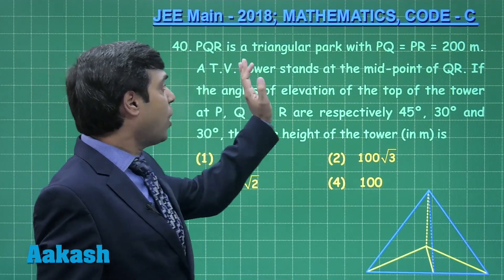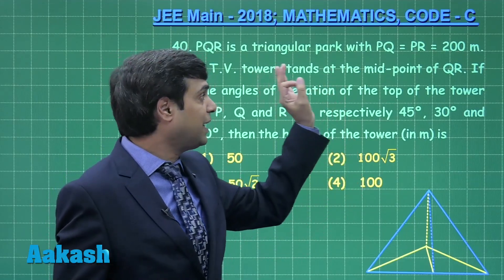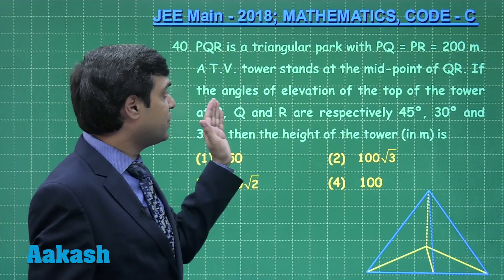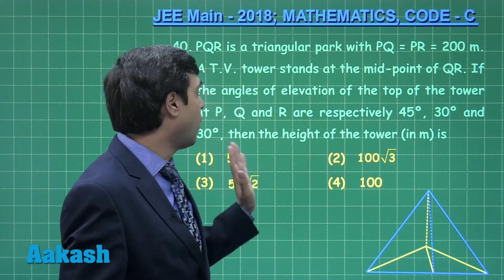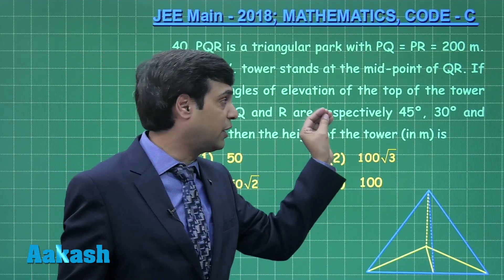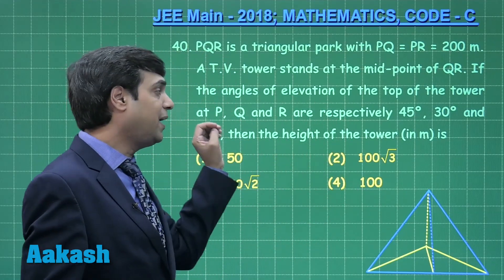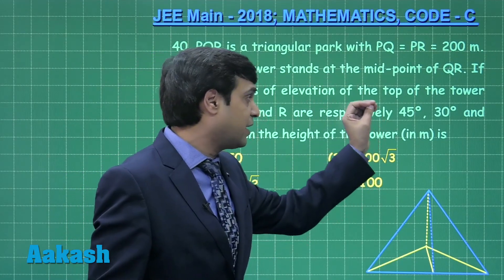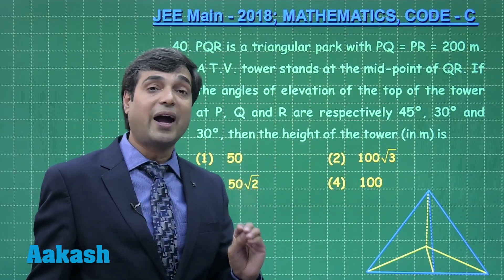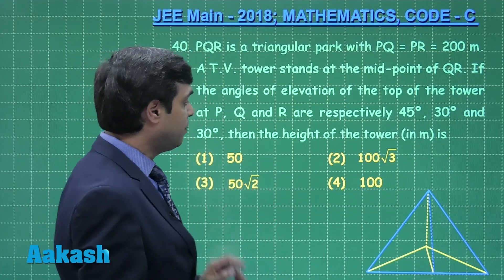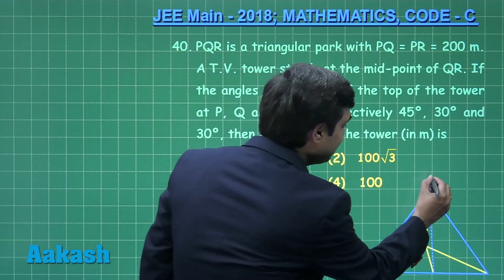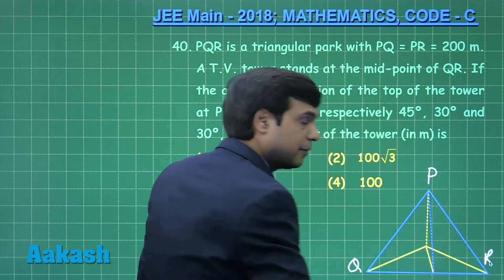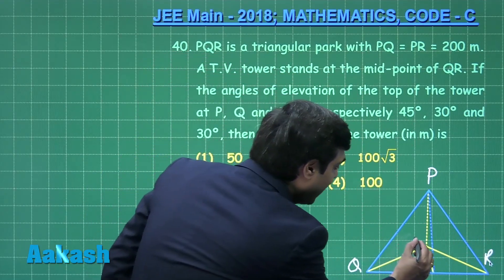Next question from trigonometry: PQR is a triangular park with PQ equals PR equals 200 meters. A TV tower stands at the midpoint of QR. If the angles of elevation of the top of the tower at P, Q, and R respectively are 45 degrees, 30 degrees, and 30 degrees, then find the height of the tower.